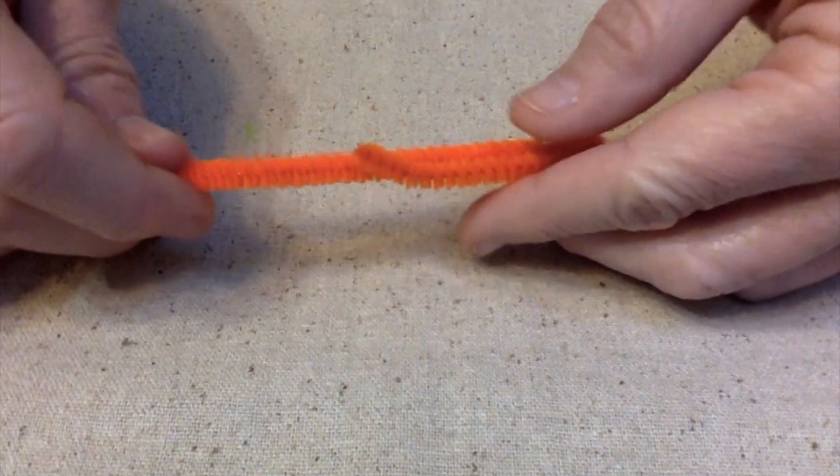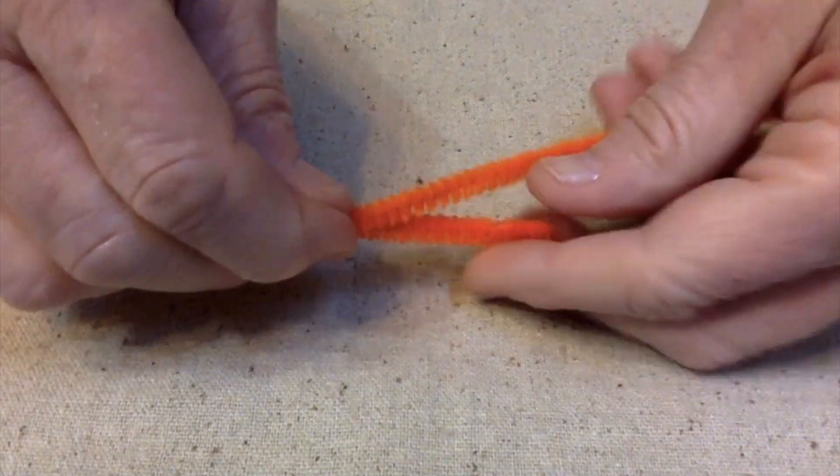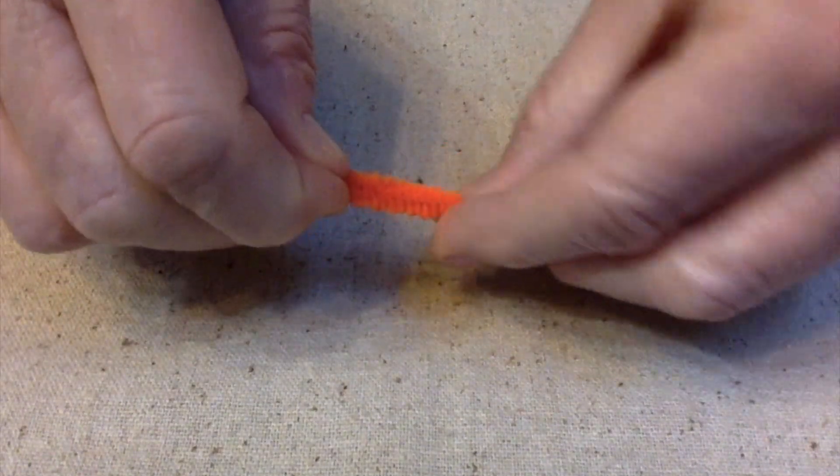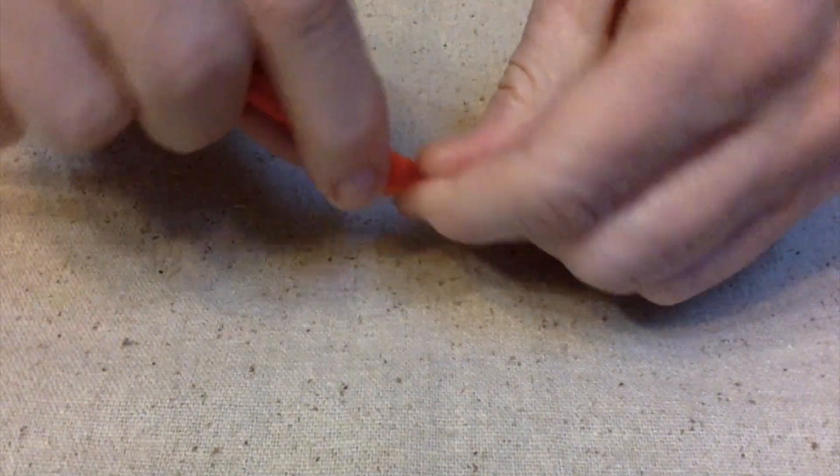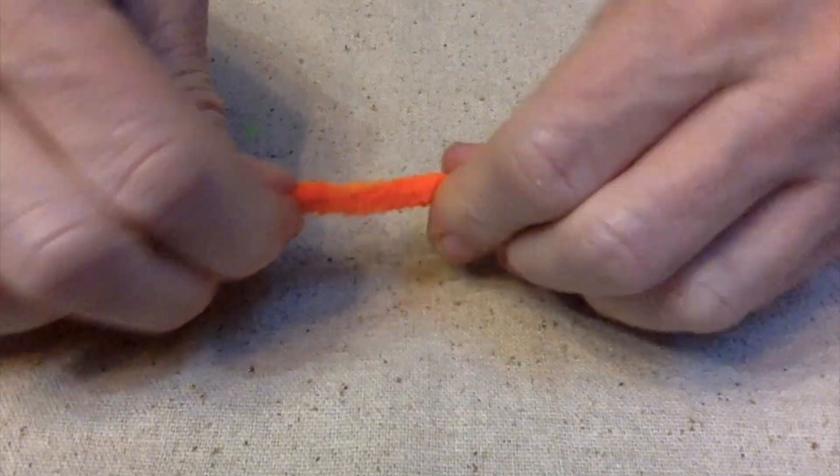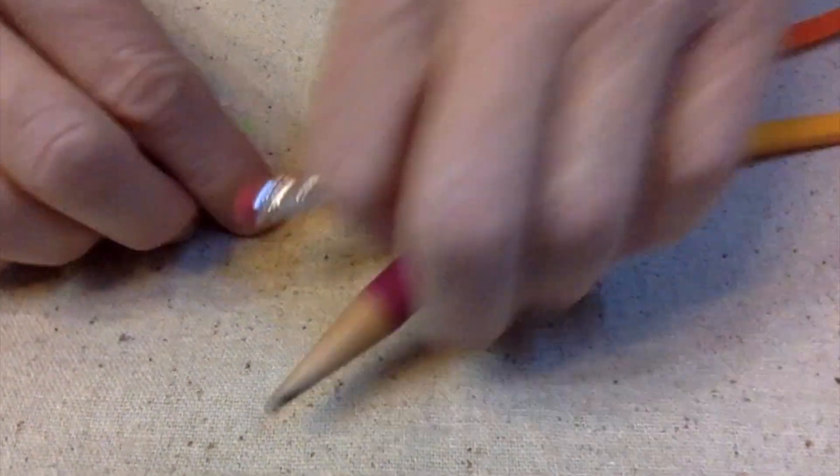So take your pipe cleaners, and we need a long pipe cleaner, so that's what we're doing here. We're just going to attach these two together by twisting them around like that. And then take your pencil.